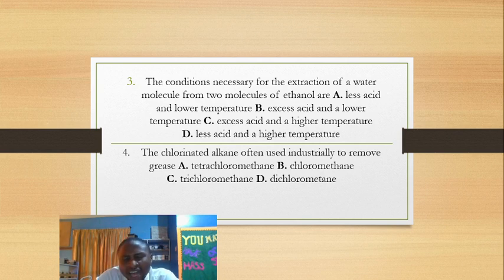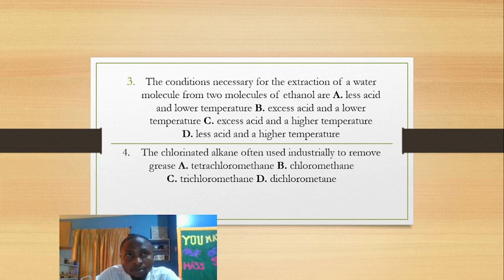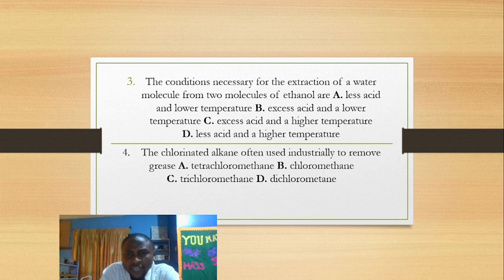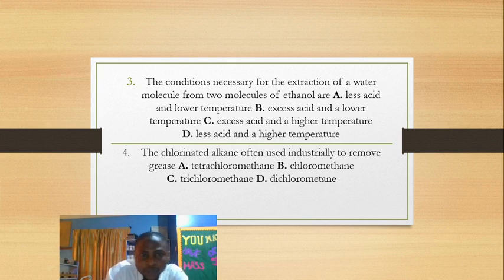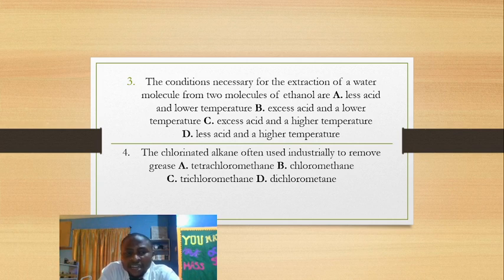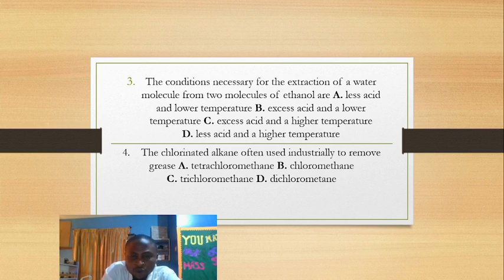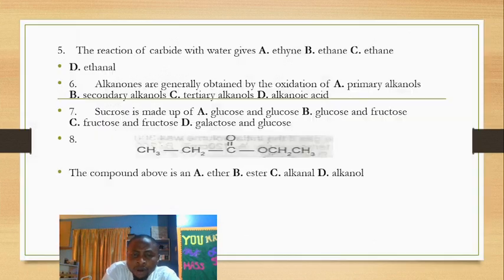Trichloromethane (CHCl3) is actually used as an anesthetic. You may also be asked what gas is used as an anesthetic — the answer is nitrous oxide, N2O, also called nitrogen(I) oxide. Trichloromethane is used as an anesthetic when giving injections in the hospital so the patient does not feel pain.